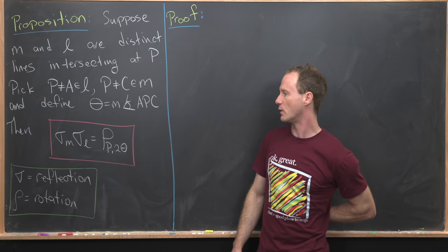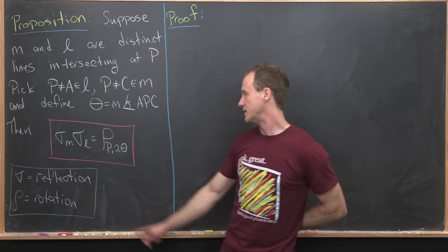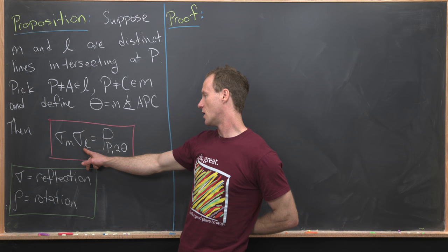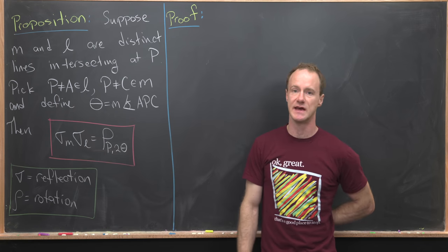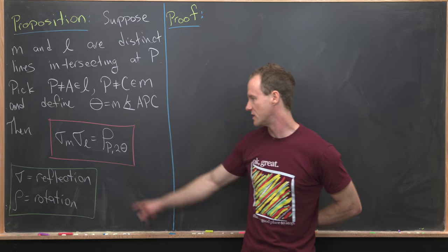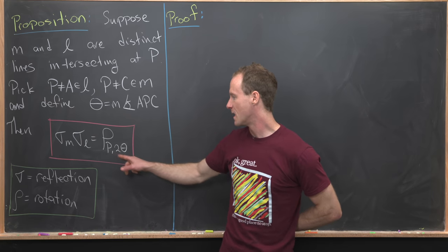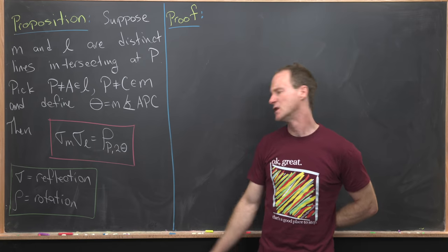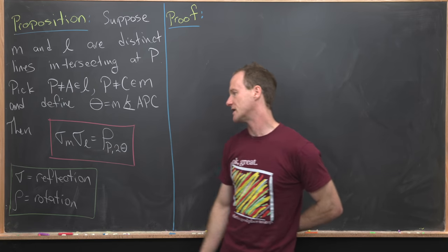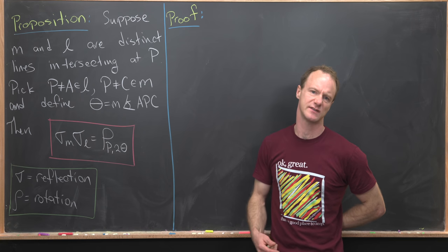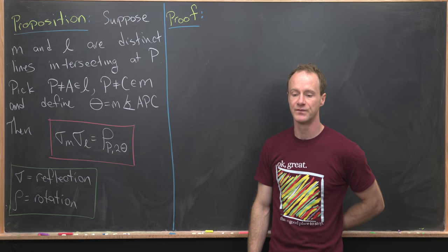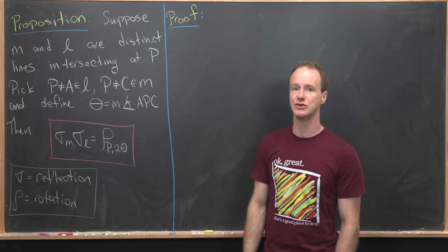The result that we will prove is that if we do a reflection across the line L, followed by a reflection across the line M, that's the same thing as a rotation based at point P of angle two theta. By sigma, I mean a reflection, and by rho, I mean a rotation.